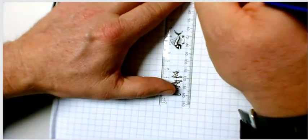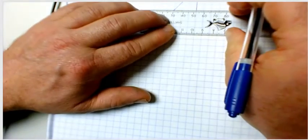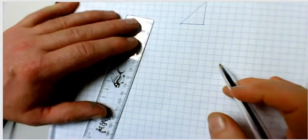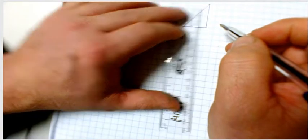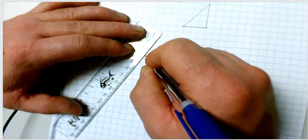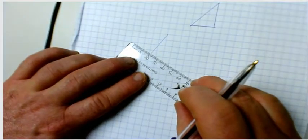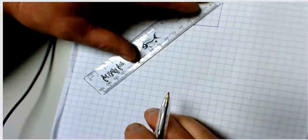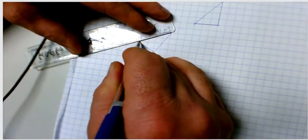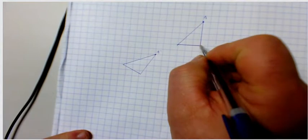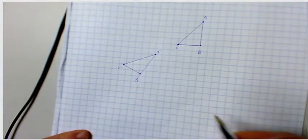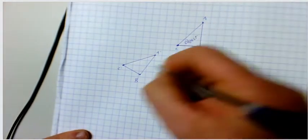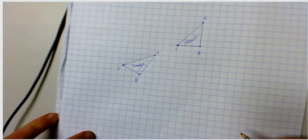Now for any shape — it doesn't matter where it is on the grid. Let's draw a triangle. I'm not going to rotate it 90 degrees this time; I'm going to rotate it a random amount. We'll label the triangle A, B, C and its rotated image A dash, B dash, C dash. This is my object — the original — and this is my image; it's been rotated.